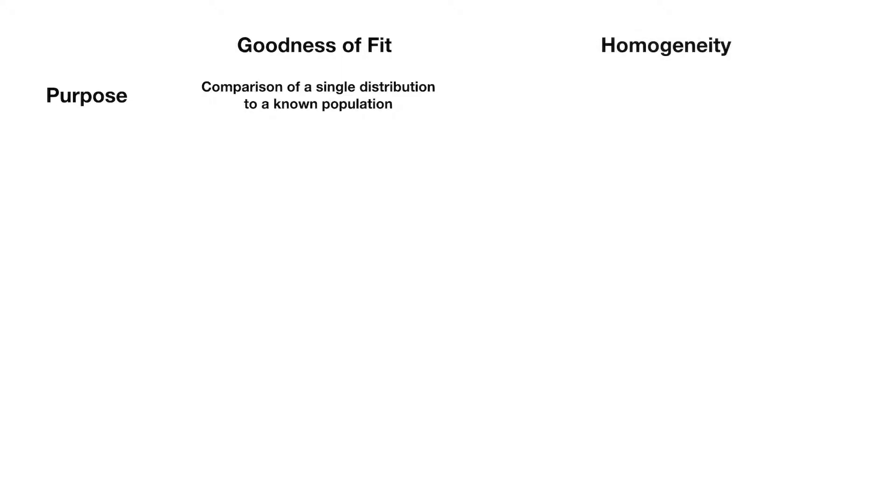Up until this point, we have used the chi-squared distribution in the context of a goodness-of-fit test, where we're comparing a single distribution to some known or theorized population. But we might be interested in the two-sample version of this test, which we call a homogeneity test. In this kind of test, we're interested in comparing two distributions drawn from two different sample populations.